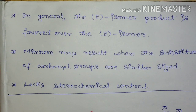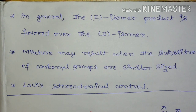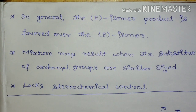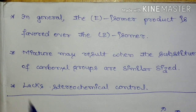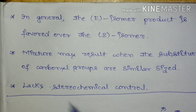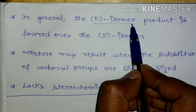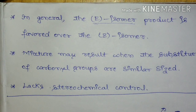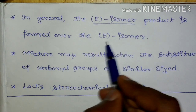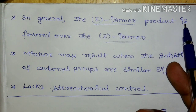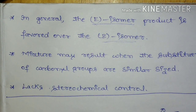Overall, whatever alkene is going to form, it will be the E isomer rather than the Z isomer. So we can conclude that McMurray Coupling in general leads to the formation of the E isomer — that is, the trans alkene will be favored over the cis alkene, and the E isomer product is favored over the Z isomer.